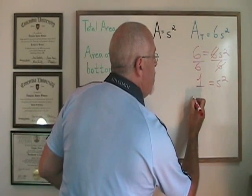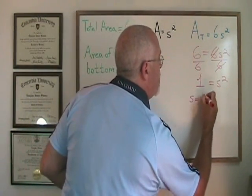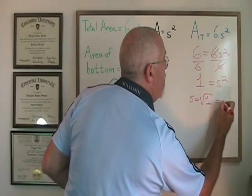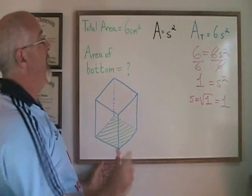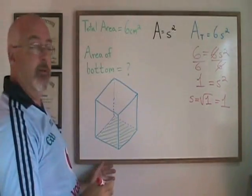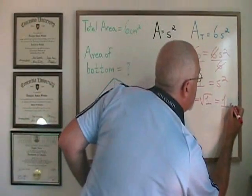If s squared is equal to 1, s will be equal to the square root of 1, which is still 1. Since the area was centimeters squared, the side length will be centimeters.